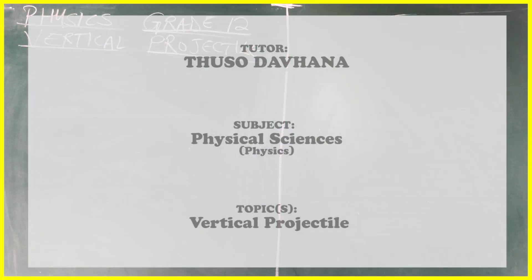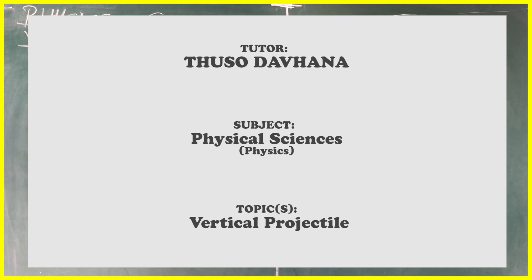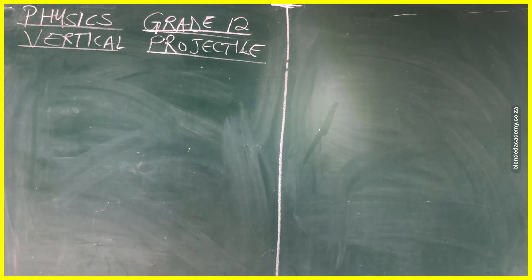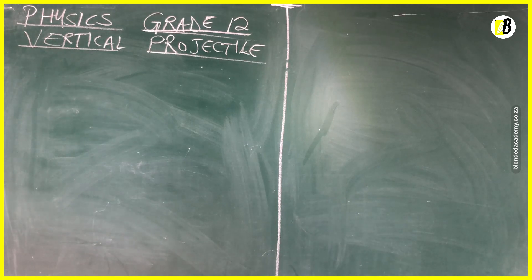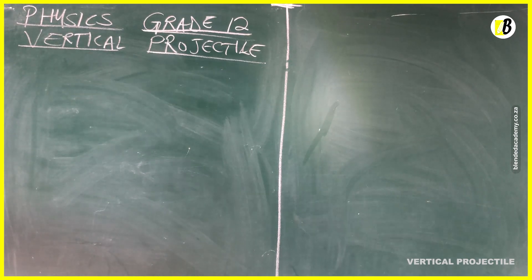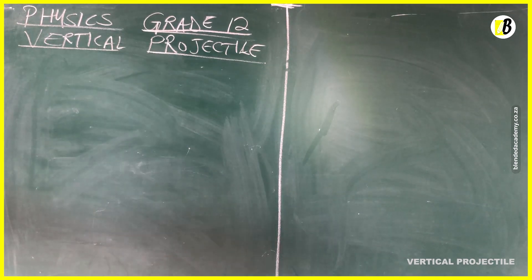Welcome guys. In this video we'll be covering physics for grade 12 learners — physical sciences paper 1 — specifically vertical projectile motion in 1D. The lesson objectives are: to define and understand projectiles, to describe the motion of projectiles, and to draw and interpret graphs of the rate of change in position, rate of change in velocity, and rate of change in acceleration.